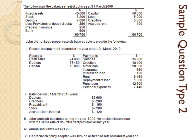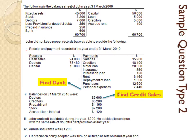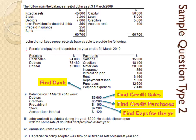We start by looking at the bank account — receipts minus payments gives the ending bank figure. Next we use the debtors control account to find credit sales, then the creditors control account to find credit purchases, then a rent account to find rent for the year, and a loan interest account to find loan interest for the year. Let's begin by picking up all information related to debtors.